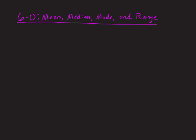Lesson 6-0: Mean, Median, Mode, and Range. We're just going to review what these are. This was a sixth grade skill, but it's going to be useful in our new unit about data.